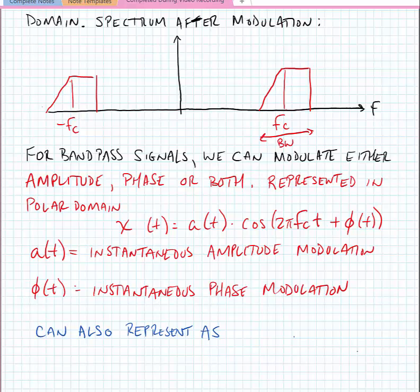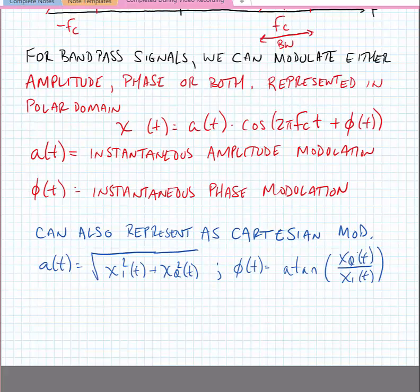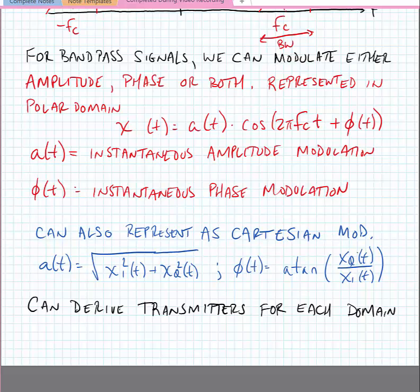We can of course also represent this polar vector in the cartesian domain as cartesian modulation. To represent in the cartesian domain we can do transformations from the polar domain or vice versa. Our cartesian signals are x sub i of t and x sub q of t and this represents an in-phase and a quadrature vector. Generally we can derive transmitters for each domain.